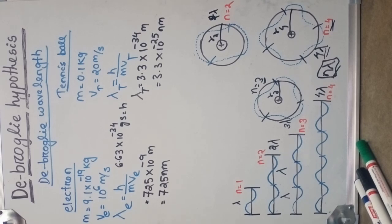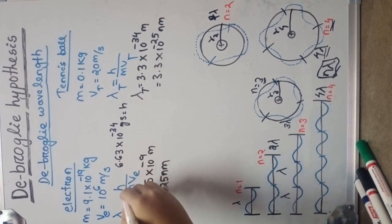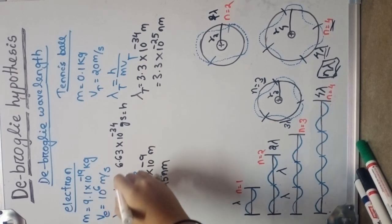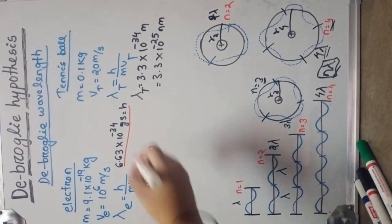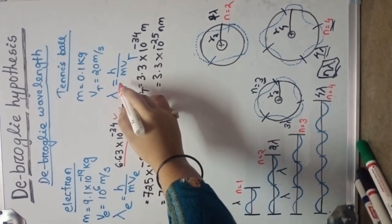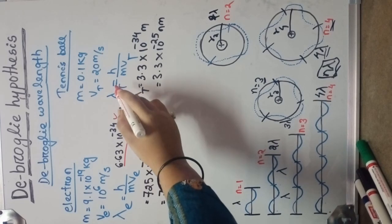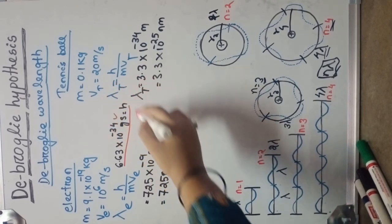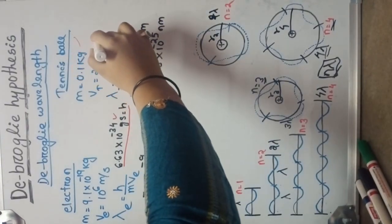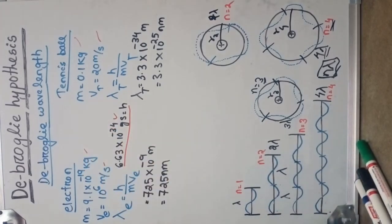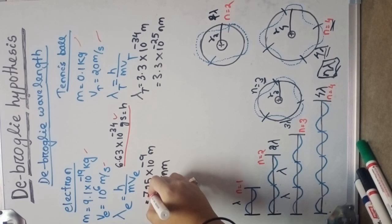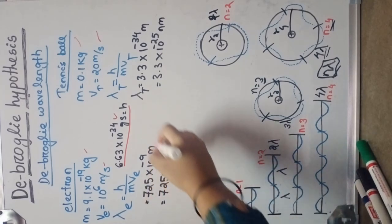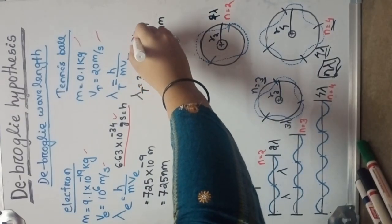As per the de Broglie hypothesis, lambda equals to h by mv. The de Broglie wavelength for the electron: lambda equals to h by m_e v_e. Take the tennis ball having velocity 20 meter per second and electron velocity as 10 to the power 6 meter per second. Putting the value of H — which equals 6.63 into 10 to the power minus 34 joule second — along with mass and velocity of the electron, we calculate the de Broglie wavelength. We get the wavelength of the electron as 725 into 10 to the power minus 9 meter.